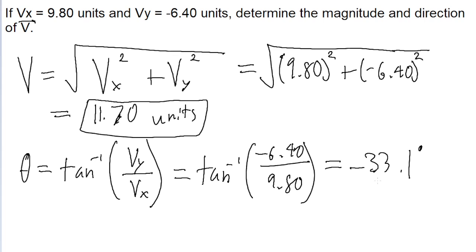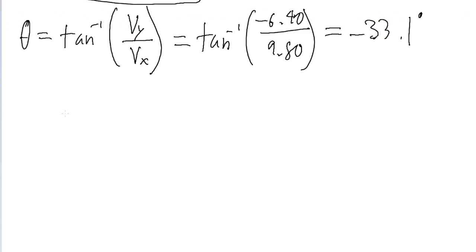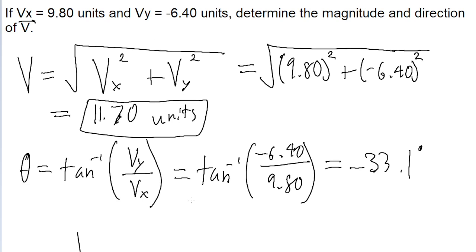And this is a negative angle, so that means that if we were to graph this out on a set of axes, then that means that the angle will be pointing in the bottom right quadrant. Which makes intuitive sense, because the x component we're given is positive, so it'd be to the right, and the y component we're given is negative, which means it'd be down. So all of that makes perfect sense.